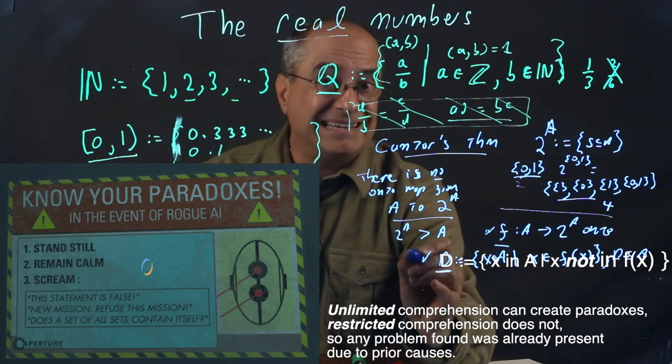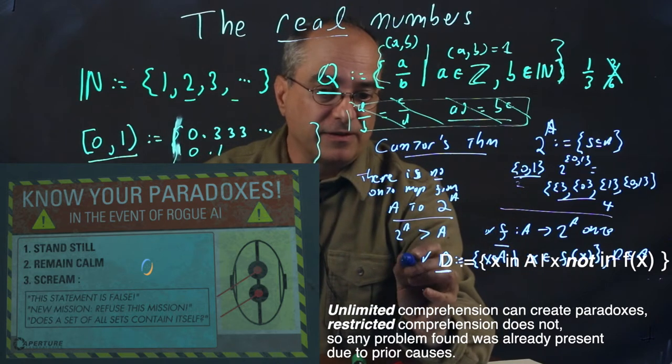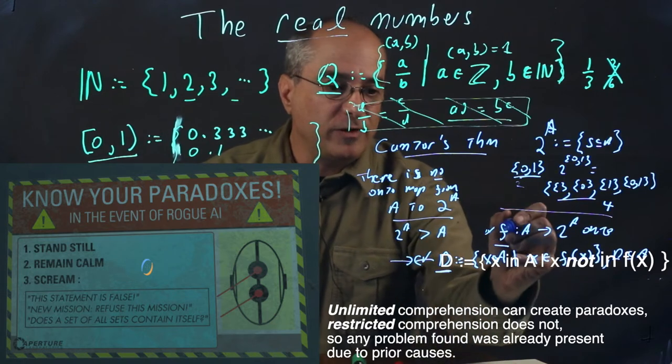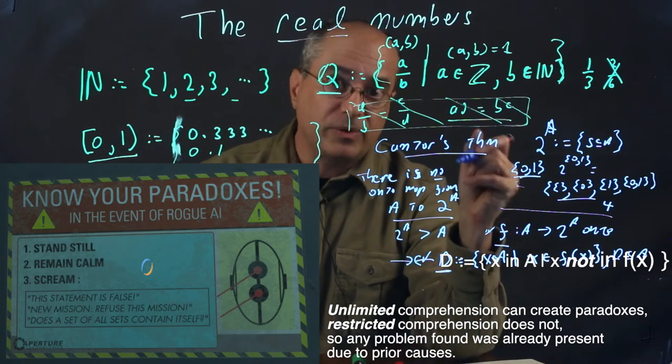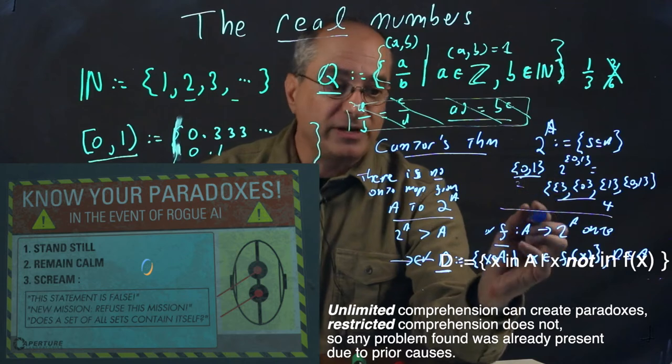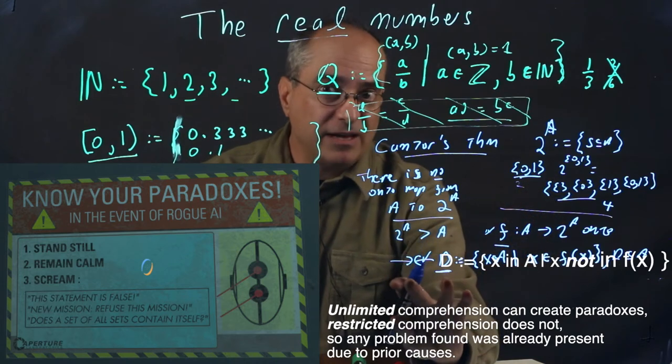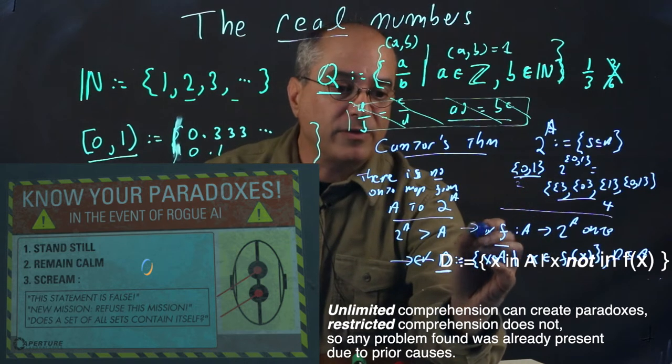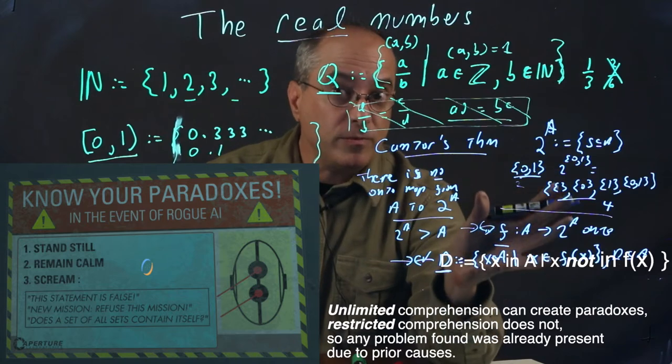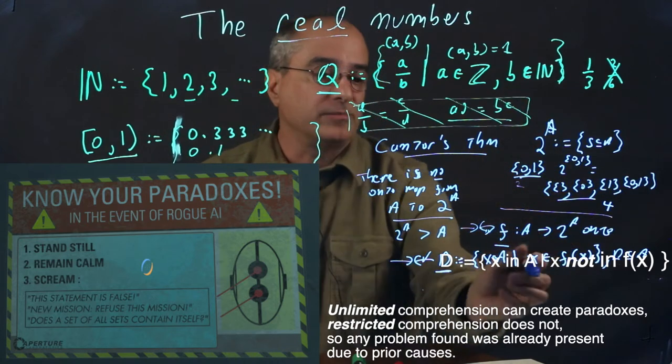What we're going to show is that D has a problem, cannot exist. Because the construction rule from f to D was one of the principles of our system, the axiom of limited comprehension, it means if D can't exist, then f must have already been non-existent. And we just assumed the existence of f, and so we're now falsifying that assumption.